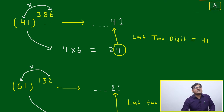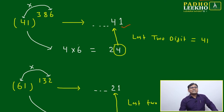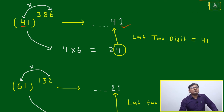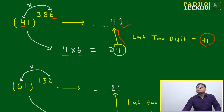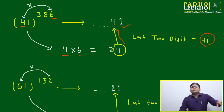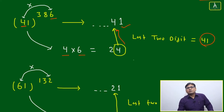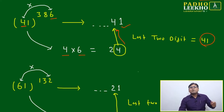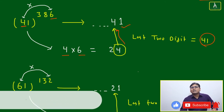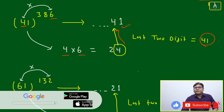Example: 41 to the power 386. Unit digit is 1 — fixed. Second last digit of the base (41) is 4. Unit digit of the power (386) is 6. Multiply: 4 × 6 = 24. Take the unit digit: 4. Last two digits are 41 again. This is not surprising — certain numbers repeat because there is a pattern cycle in last two digits.